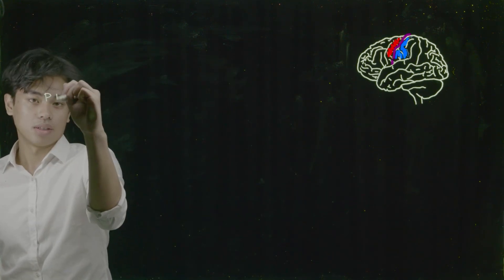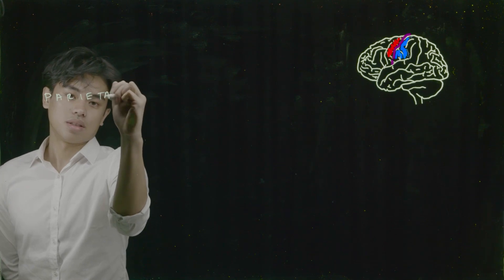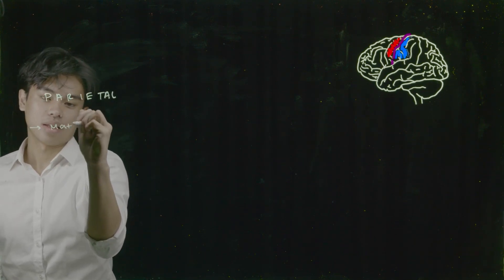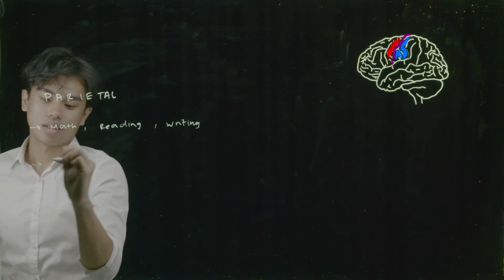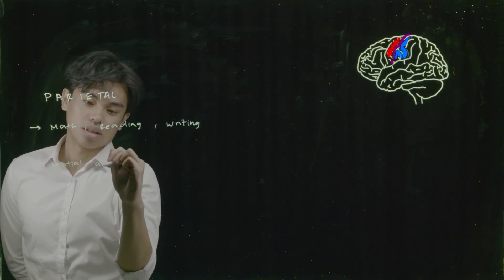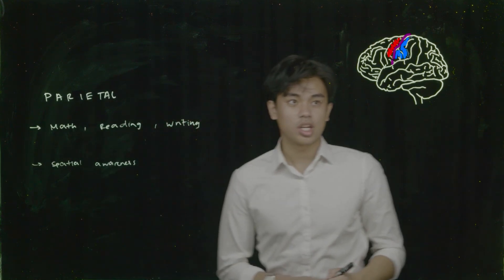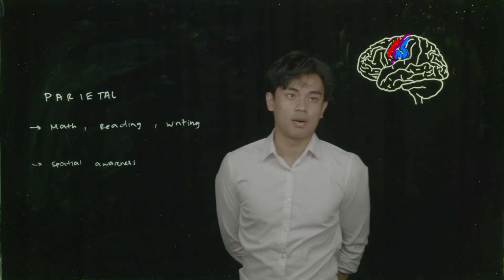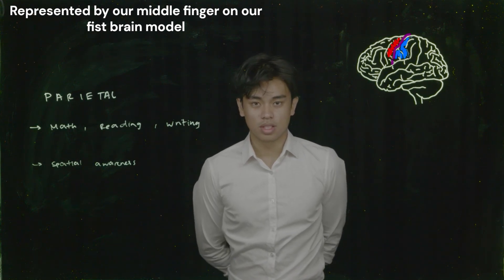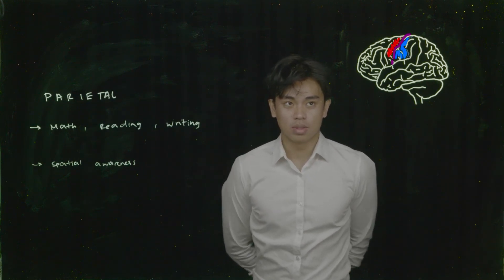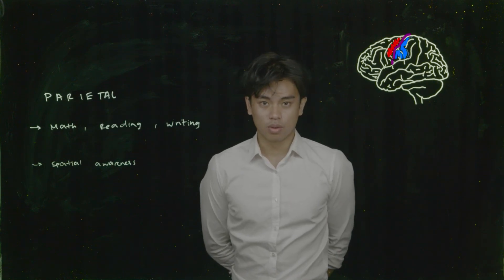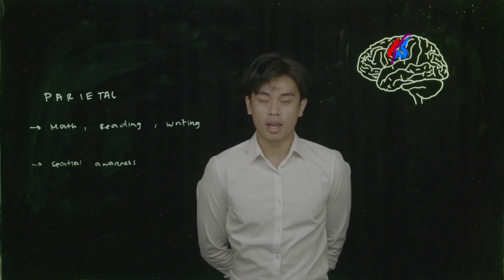The parietal lobe has many specializations, mainly for higher cognitive functions, including solving math, reading, writing, and spatial awareness. What we'll be focusing on is the gyrus colored in blue — the postcentral gyrus. Our postcentral gyrus is responsible for somatosensation. If you were to be touched, that message would be sent up through the fibers at the postcentral gyrus. It is also responsible for proprioception and the ability to feel temperature.